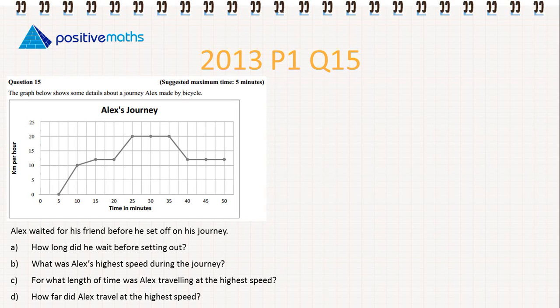Alex waited for his friend before setting off on his journey. So part A, how long did he wait before setting out? If we're looking for how long did he wait, we're talking about the time, so we're looking then at the x-axis. So it starts at zero, but he didn't start his journey until five minutes later. So he waited for five minutes.